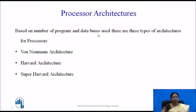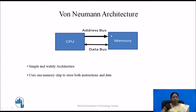Based on the number of program and data buses used, there are three types of processor architectures. The first is Von Neumann architecture, which uses a single memory to store both instructions and data. The CPU and memory interact via address and data buses. Because it uses a single memory chip, it is a simple and widely used architecture.